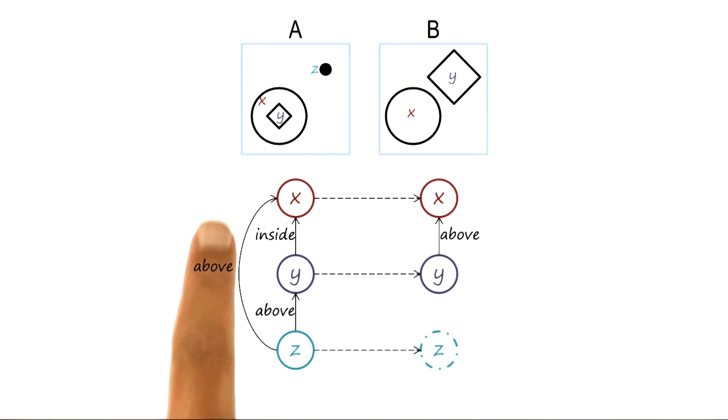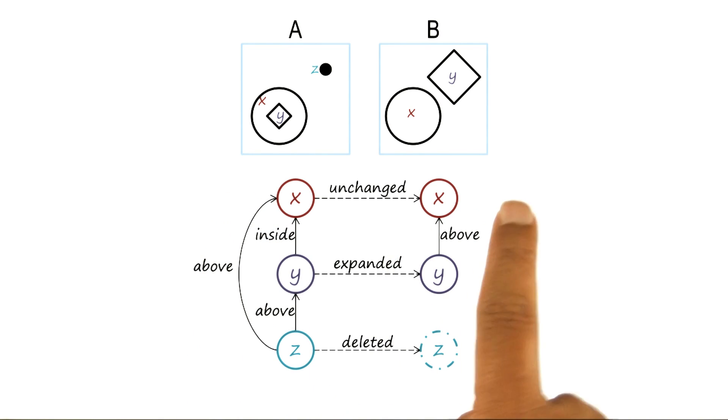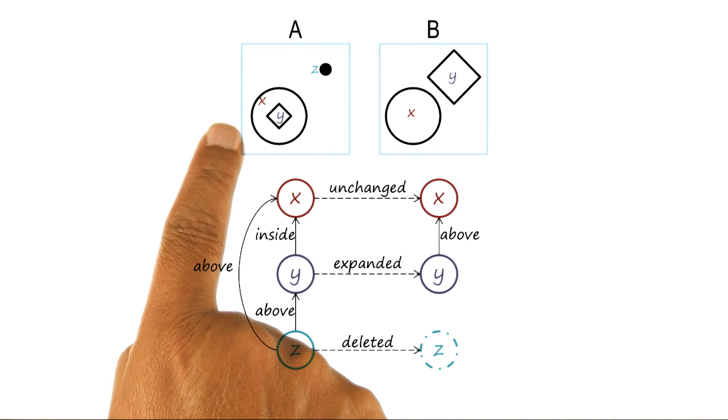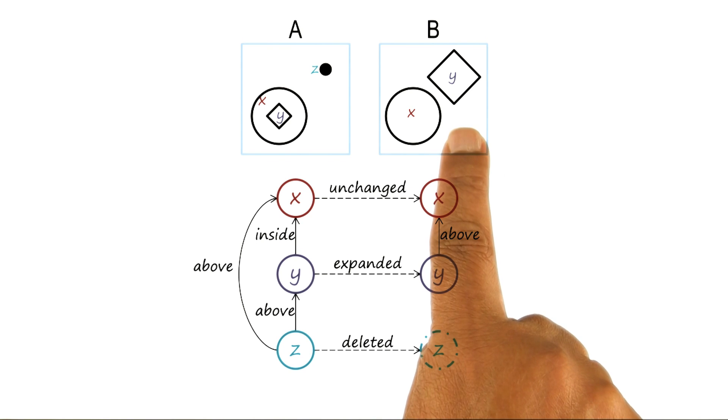Now, for X and Y, that is straightforward. For Z, well, there is no Z in B. So we'll have a dummy node here in B, and we will see how we can label the link here so that we can capture the idea that Z doesn't occur in B. So we might say that X is unchanged because X, the circle here, is the same as the circle here.